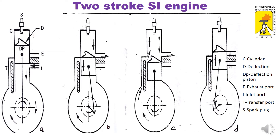Before the piston reaches TDC, the air-fuel mixture is compressed and the spark plug produces a spark. The air-fuel mixture ignites, releasing heat. The temperature and pressure both rise very high, and the high-pressure gas pushes down on the top of the piston.